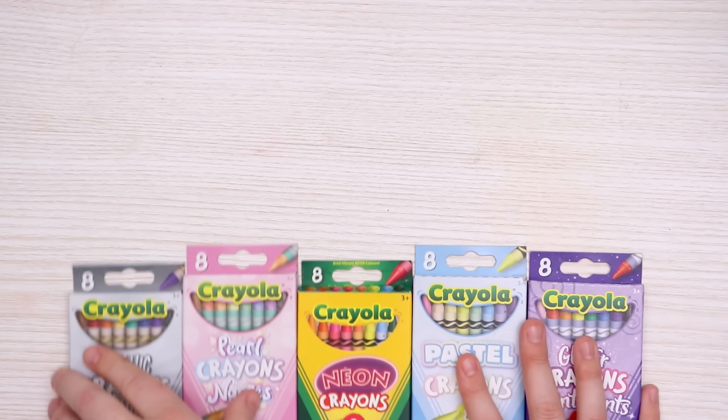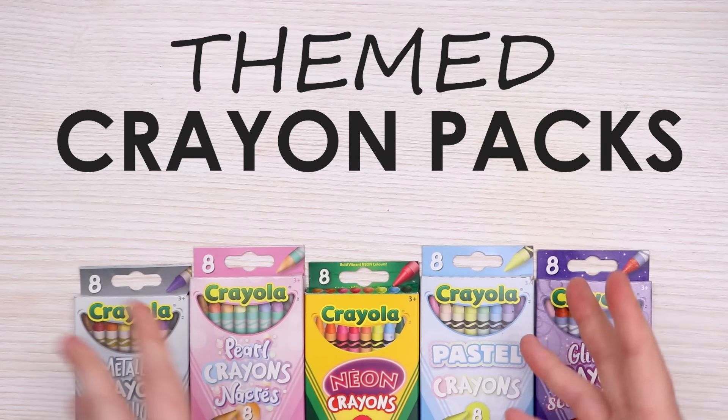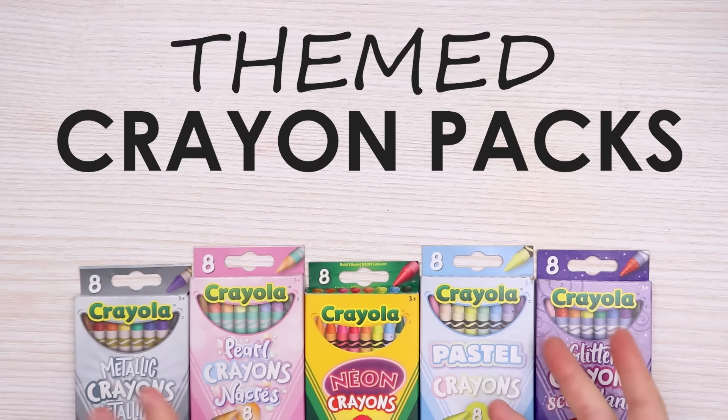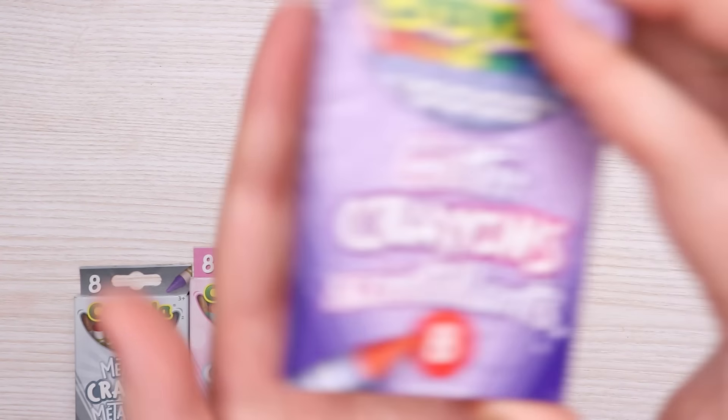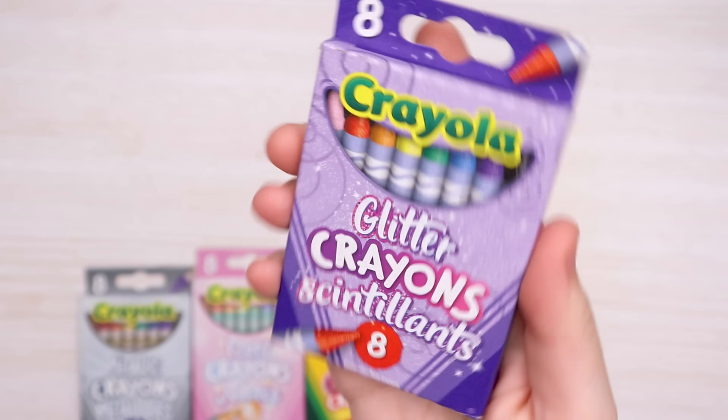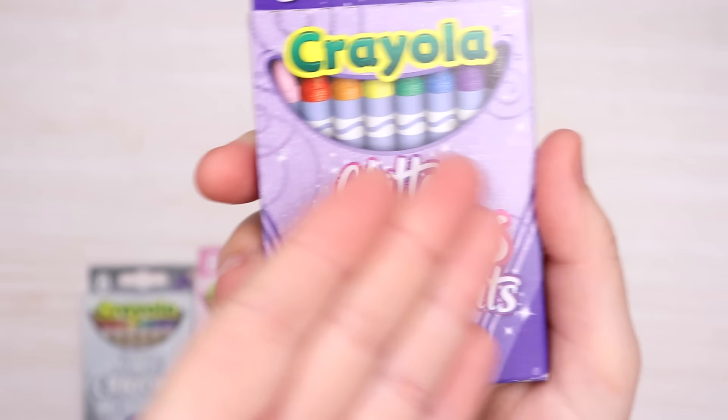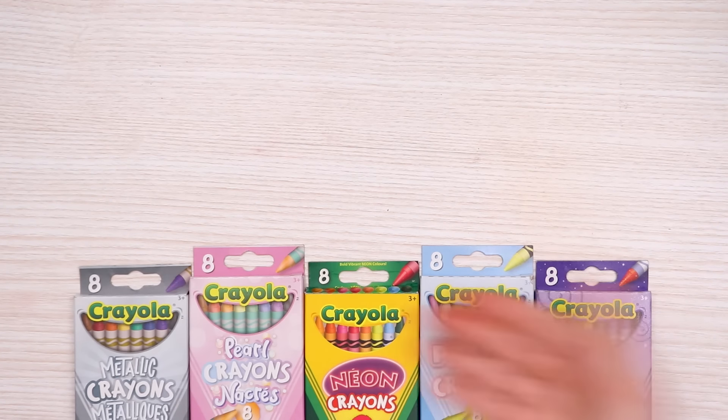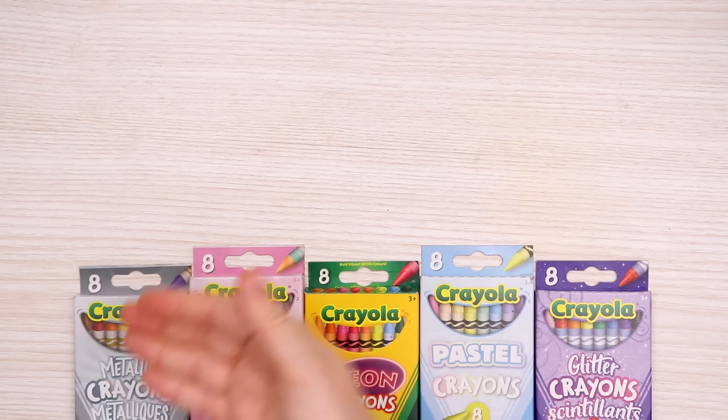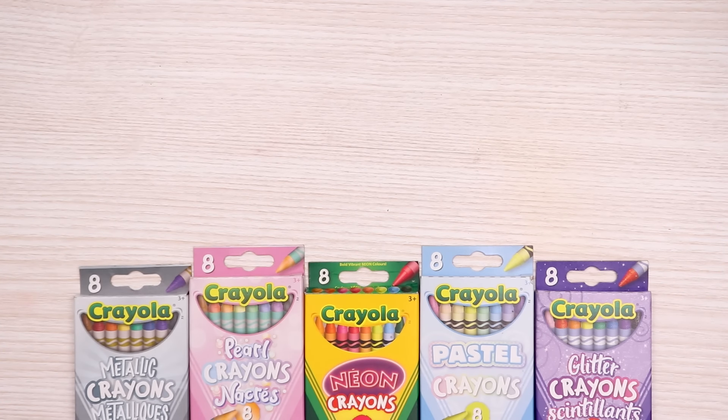Okay, let's get into the video. The Year of the Crayon continues with these adorably themed and tiny packs of crayons I found at the dollar store. We have metallic, pearl, neon, pastel, and glitter. Each of these packs of crayons comes with only eight crayons per pack and they are themed towards whatever theme they have. I thought it would be cute to create an illustration based on each of these packs by using only the crayons in each of these packs.